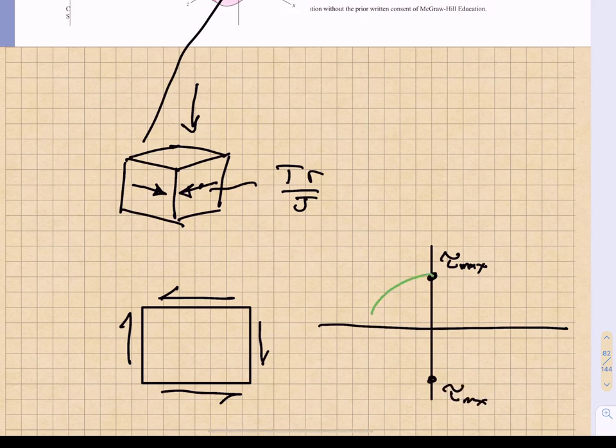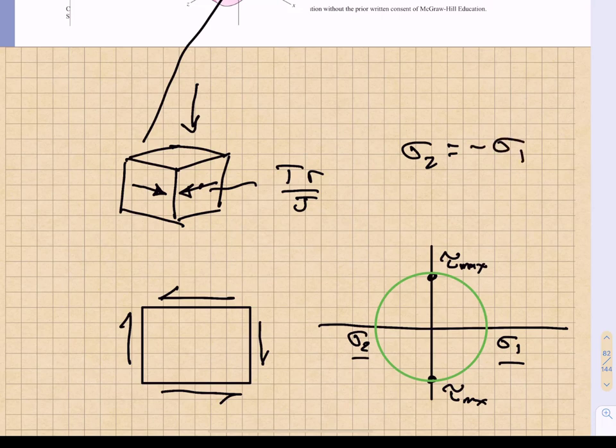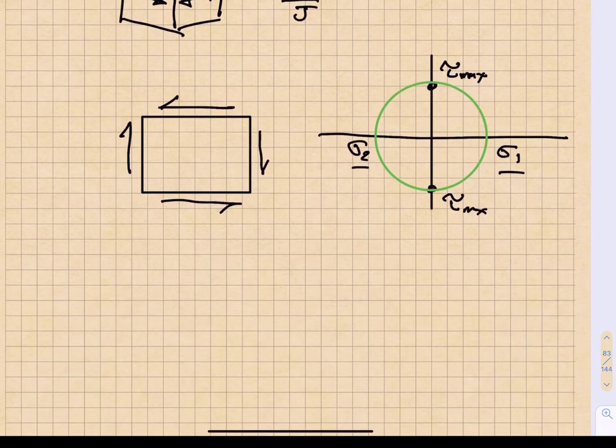And if we were to draw a circle in Mohr space for these, we would find that there is an associated sigma 1 and sigma 2. They are equal and opposite, where sigma 2 is simply minus sigma 1. So this is a pure shear stress state.